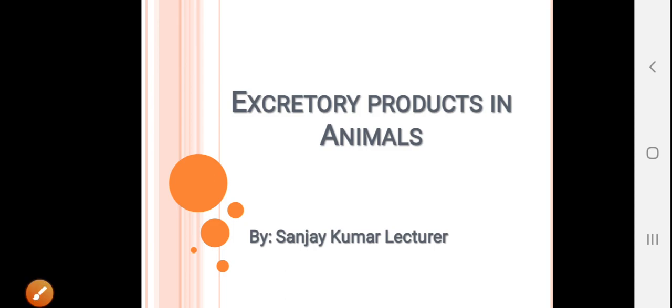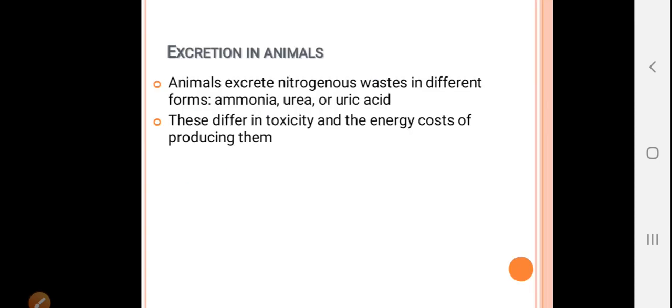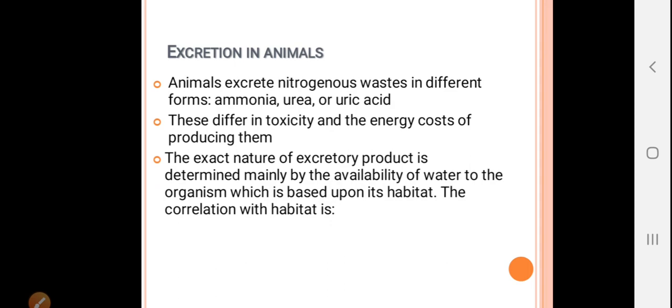Hello, welcome to my channel. Today's topic is excretory products in animals. First of all, what is excretion? Excretion means removal of nitrogenous waste from the body, and these nitrogenous wastes are produced by metabolic activity.